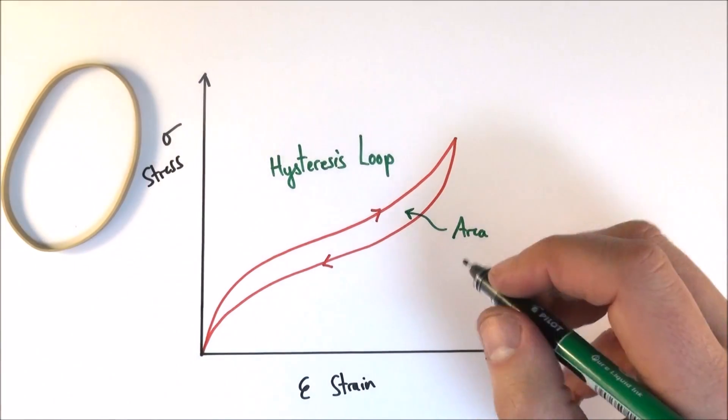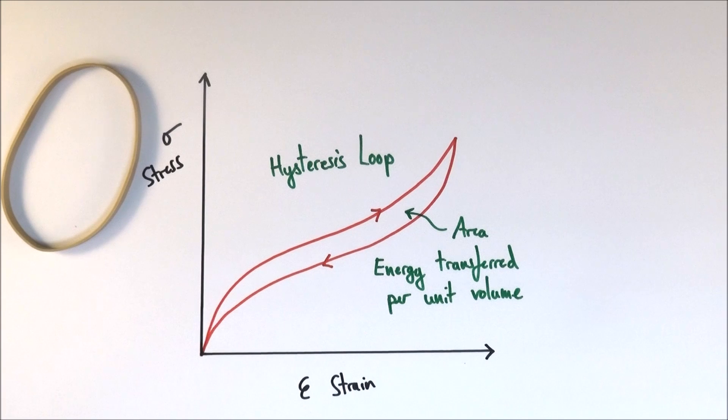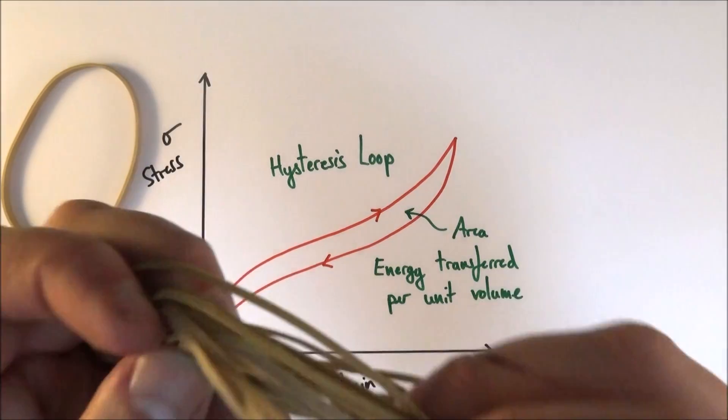Rubber is a great example of a material that doesn't obey Hooke's law, which means that the stress isn't really proportional to the strain. Why is that? Well, if we think about what the actual structure of rubber is.